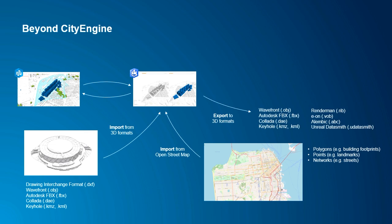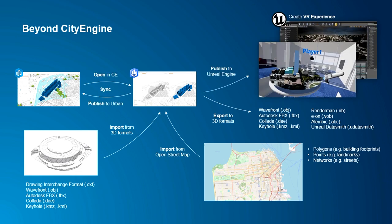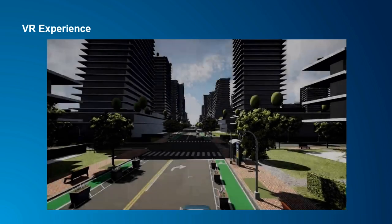Beyond creating content in CityEngine, you can also use it as a gateway to import 3D formats from other tools. If you're building 3D models in SketchUp or CATIA, you can import those into CityEngine, reference them, and push them up as projects into ArcGIS Urban. If you need context, you can build 3D context from OpenStreetMap, publish it as a service to consume as context in ArcGIS Urban. There's a variety of formats you can use to bring data across through CityEngine. You can take projects out of Urban and push them out to the VR experience Pascal was talking about.